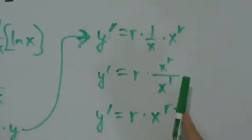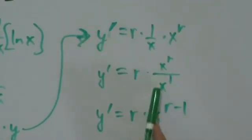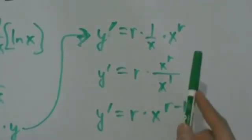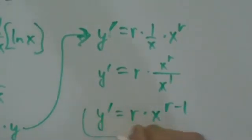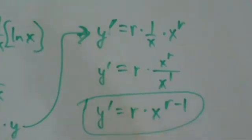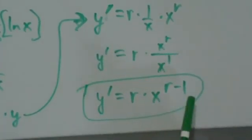Because if you divide powers like this and they have the same base, then that just becomes exponent on the top minus exponent on the bottom with that same base. And that's our desired result, right? Y prime equals r times x to the r minus 1.